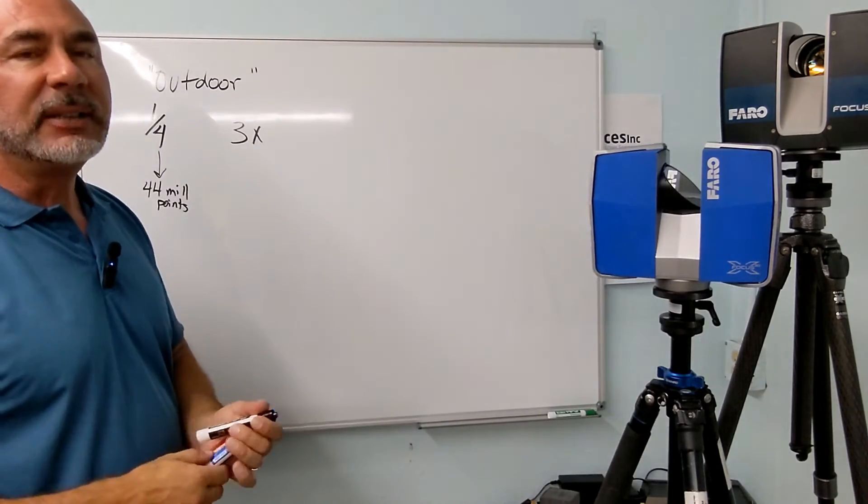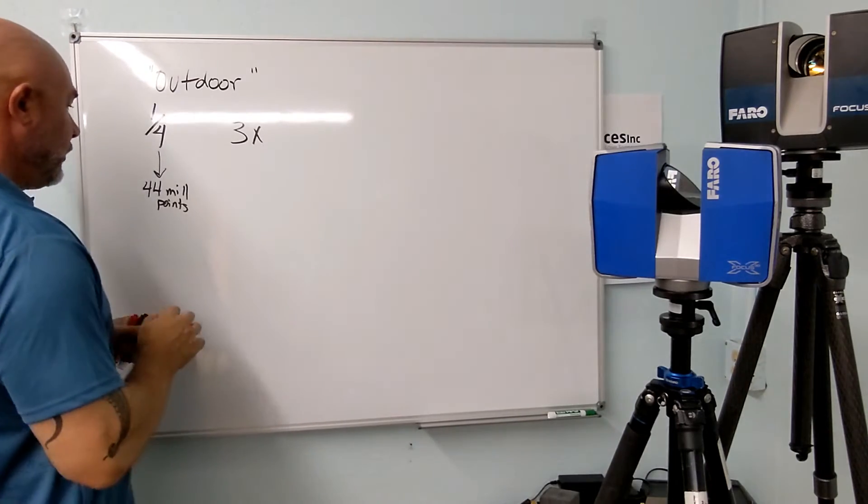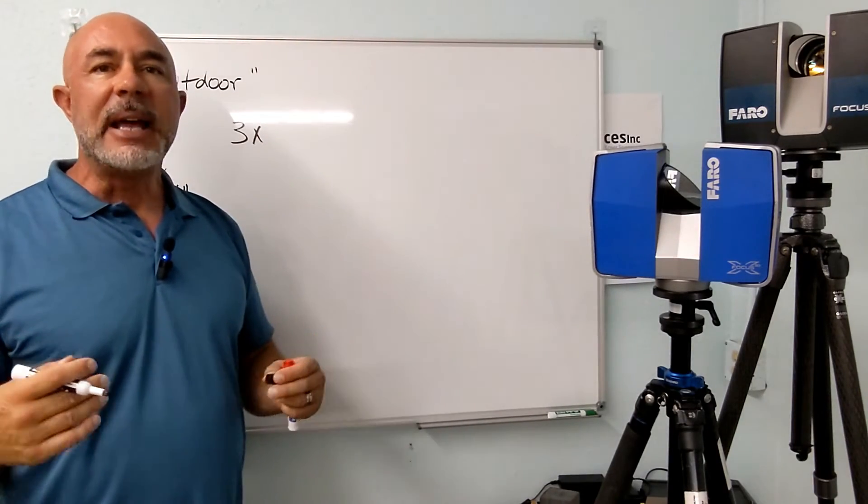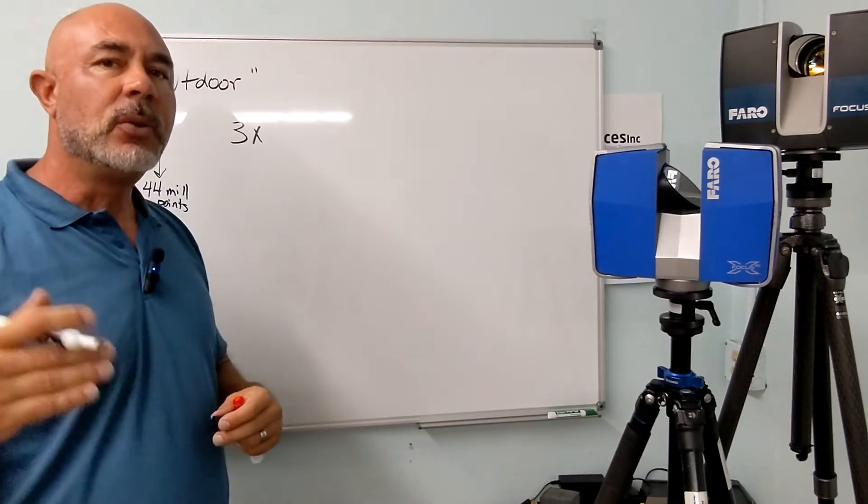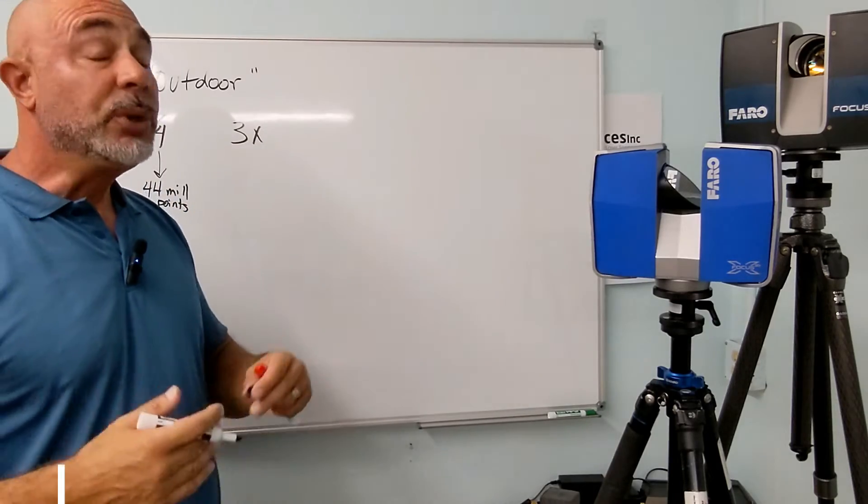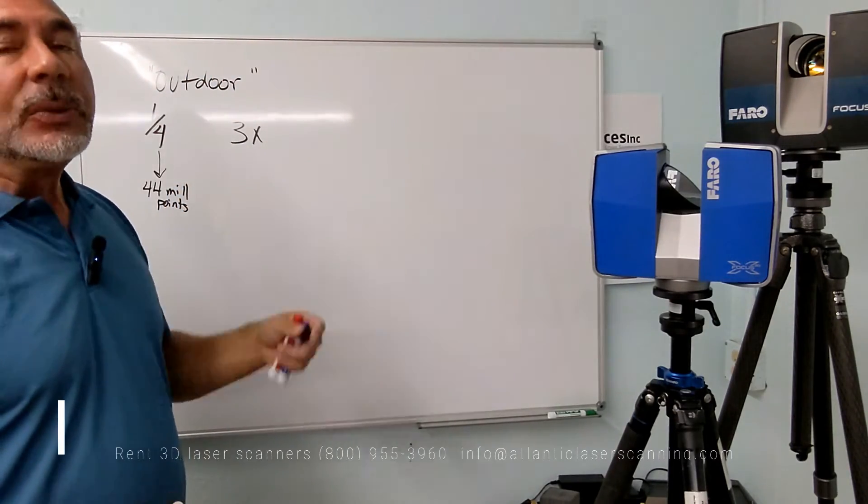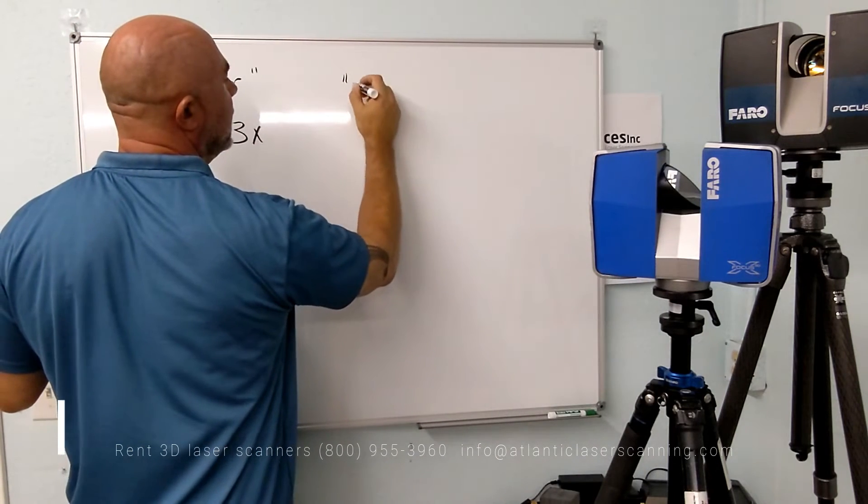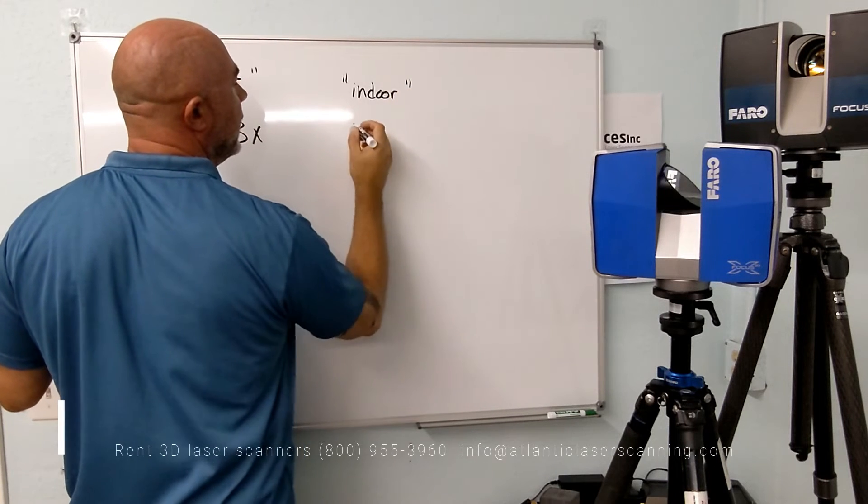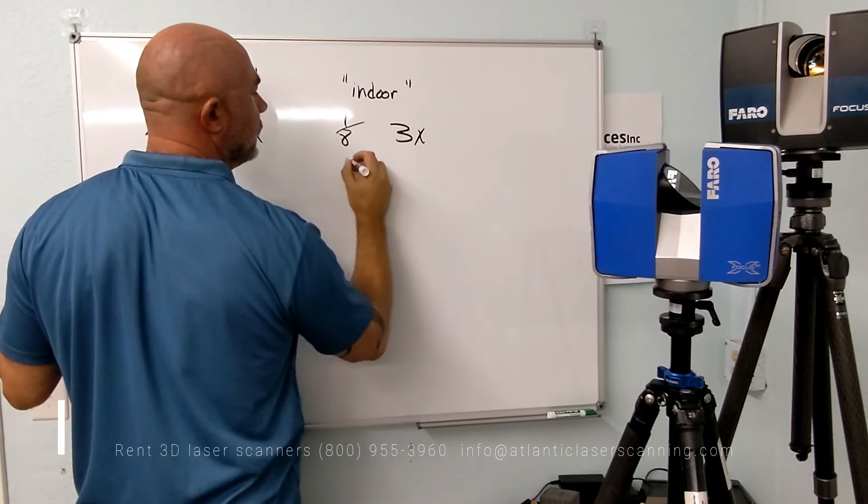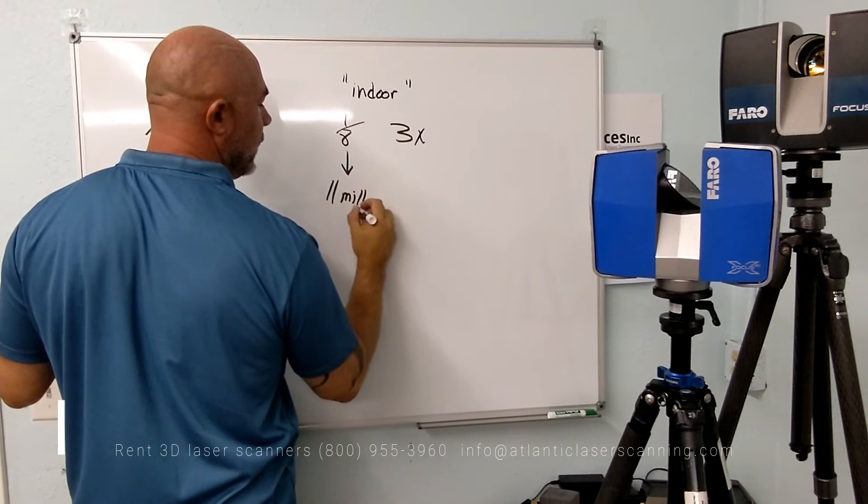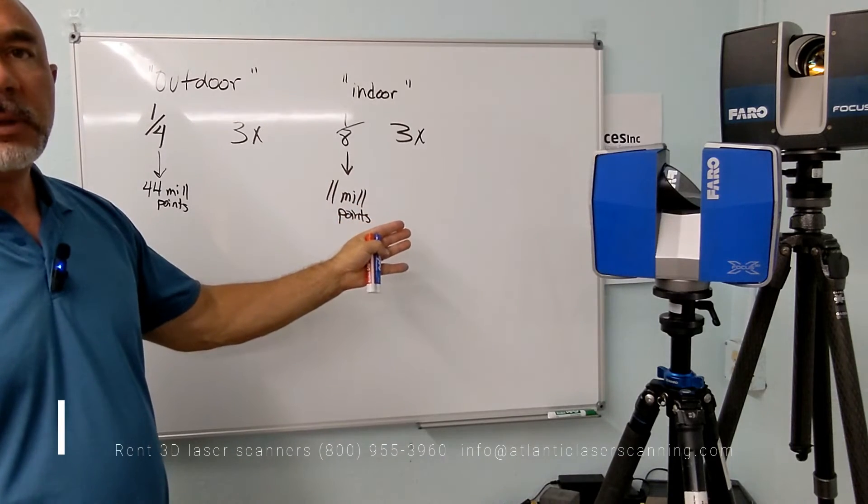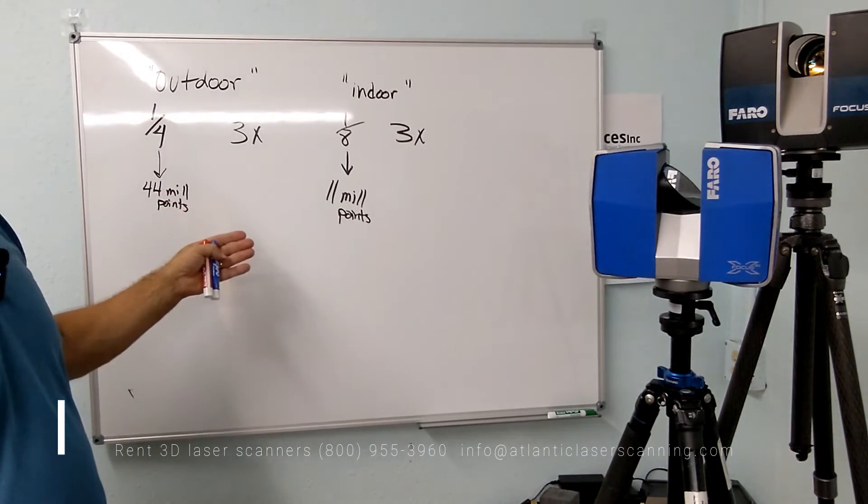Well, let's compare that to what an indoor scan setting would be, and then why there's a difference. So our indoor or our close proximity scan setting would be one-eighth, 3x. One-eighth is 11 million points. Now, why 11 for a short distance and 44 million points for a long distance?